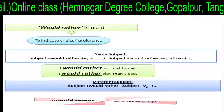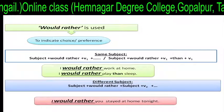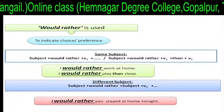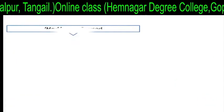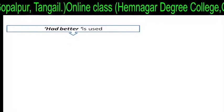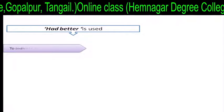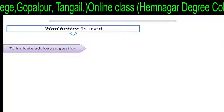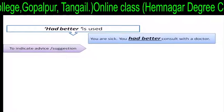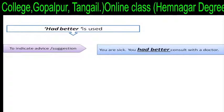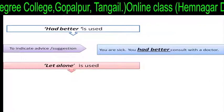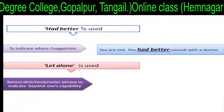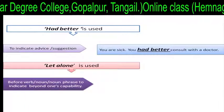Structure two, different subject: subject plus 'would rather' plus subject plus V2 plus extension. For example: 'I would rather you stayed at home tonight.' Had better is used to indicate advice or suggestion. For example: 'You are sick. You had better consult with a doctor.'